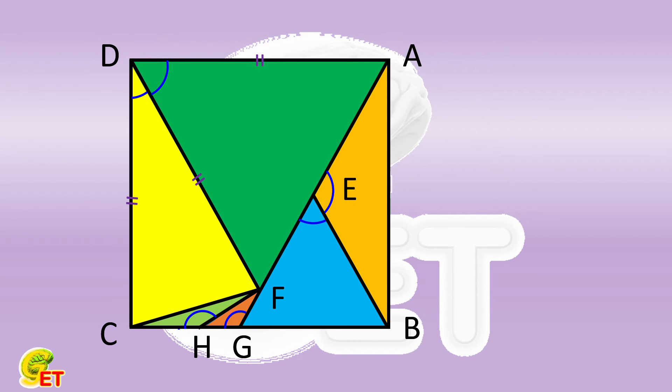Once each vertex angle is determined, the task is more than half done. Next, we set the angle FCH equal to X. According to the fact that an exterior angle of a triangle is equal to the summation of its two opposite non-adjacent interior angles, we have the angle FHG equal to twice X. For the same reason, the angle FGB is 4 times X.